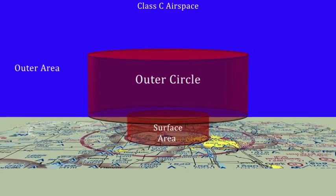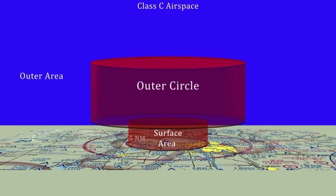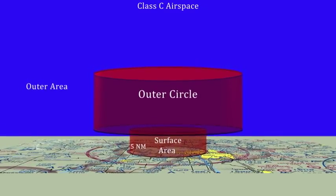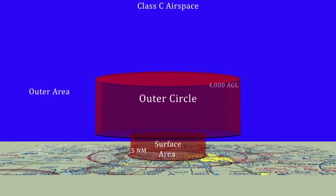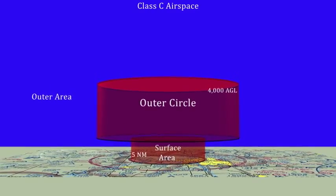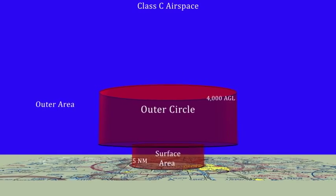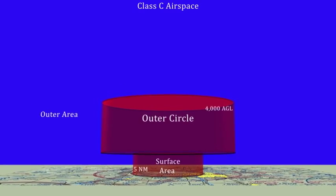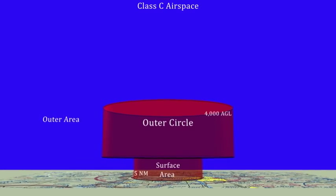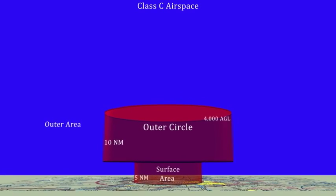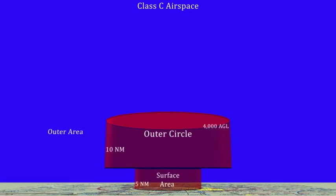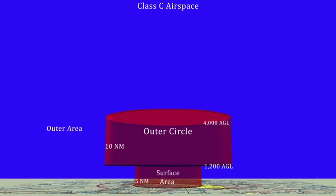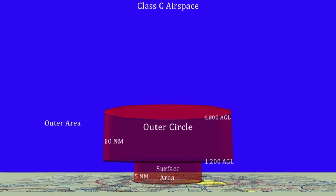The surface area extends from the primary airport to a distance of 5 nautical miles, and includes altitudes between the surface and 4,000 feet above the primary airport's elevation. This area is also referred to as the inner circle. The outer circle extends from 5 to 10 nautical miles from the primary airport and includes altitudes between 1,200 AGL and 4,000 feet above the primary airport's elevation.